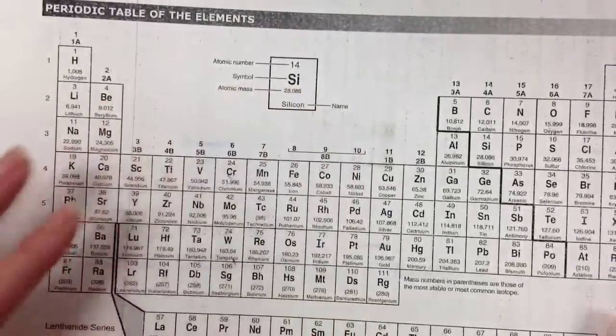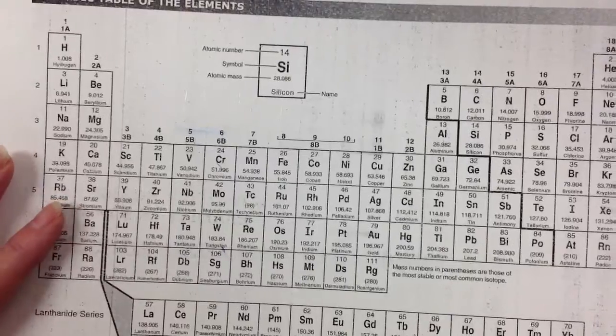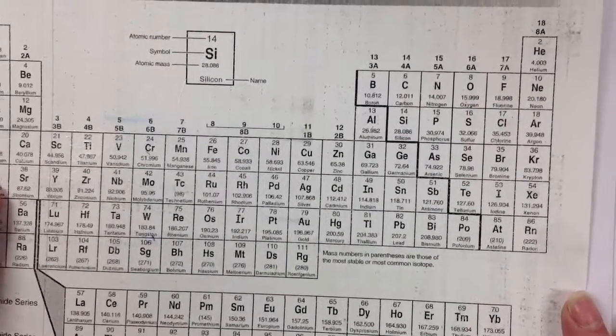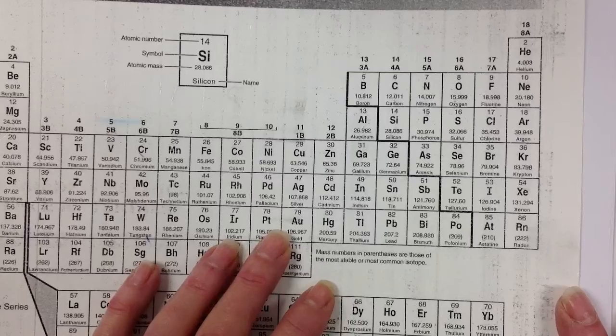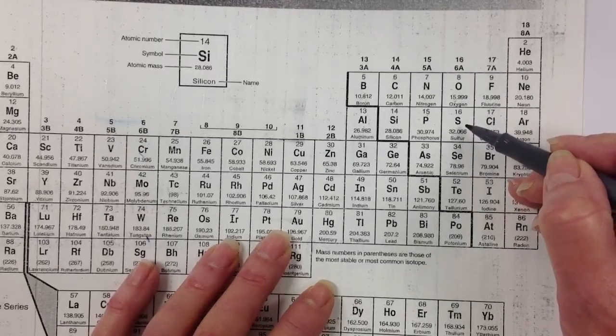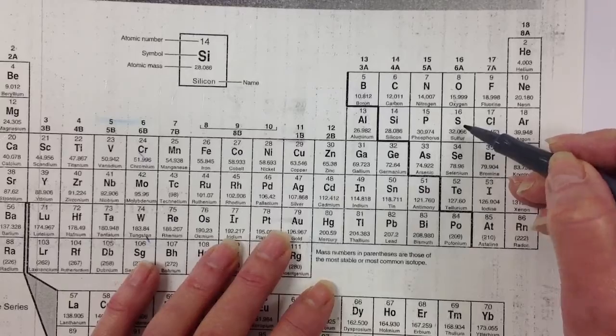Sulphur. Let's find sulfur. Sulphur is S. S is to the right of the stair step. So you see right here is sulfur. So sulfur is definitely a non-metal.